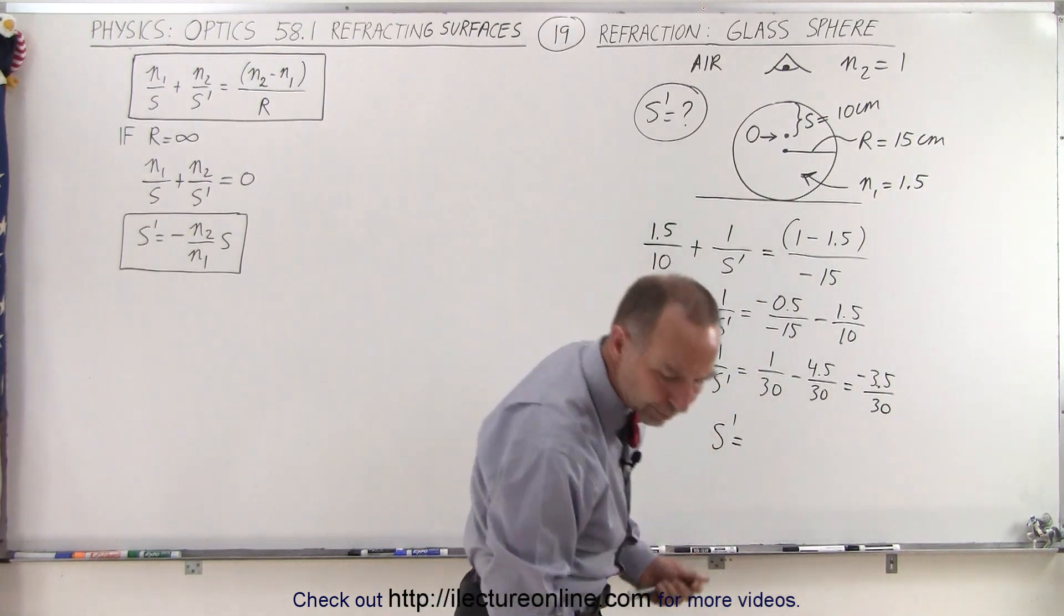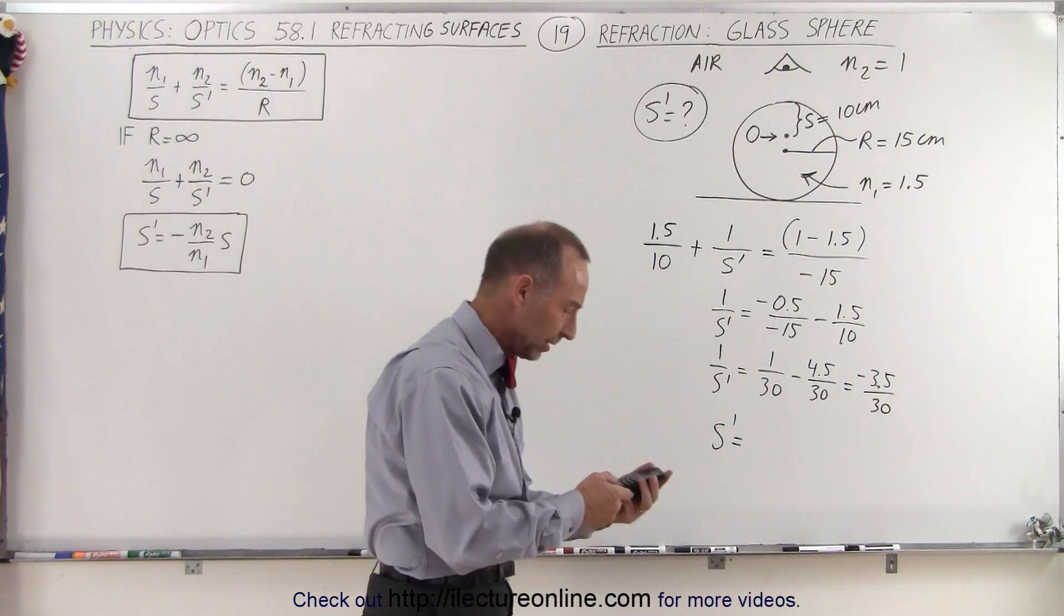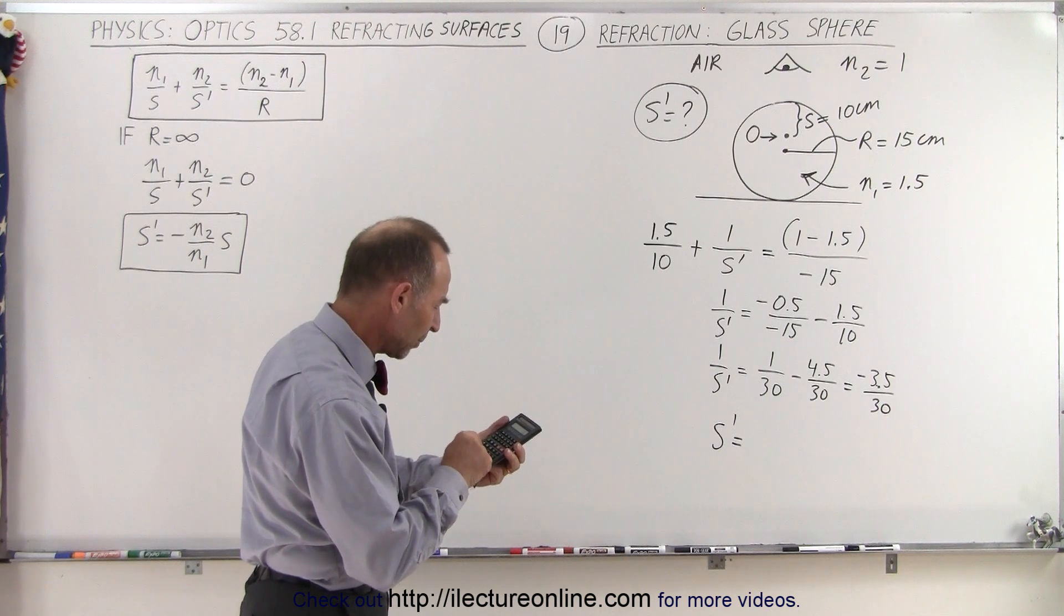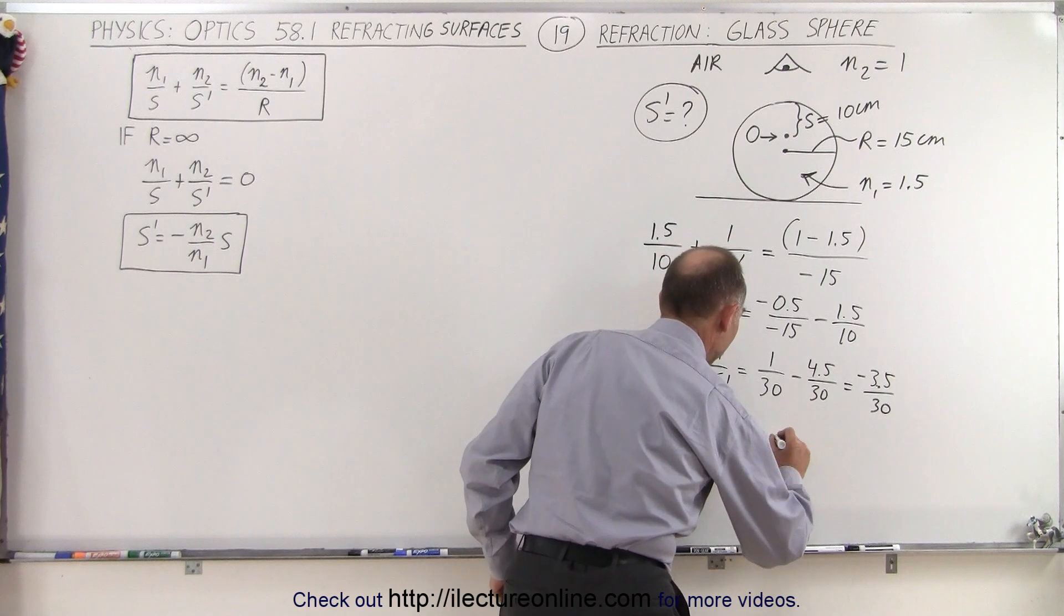Now let's see, where's my calculator? Ah, there it is. So we have 30 divided by 3.5, that's going to be 8.57 with the negative in front of it. Minus 8.57 centimeters.